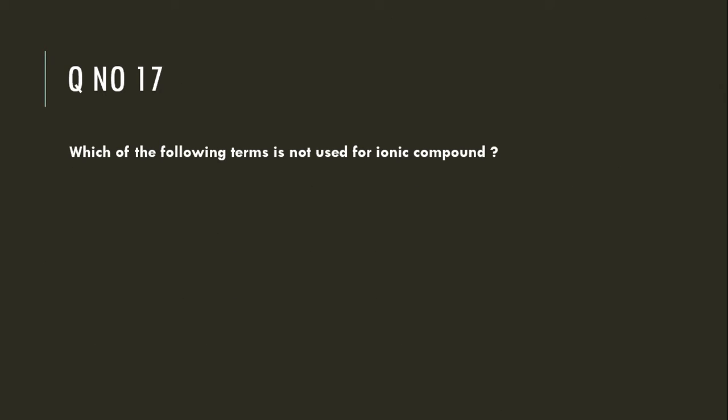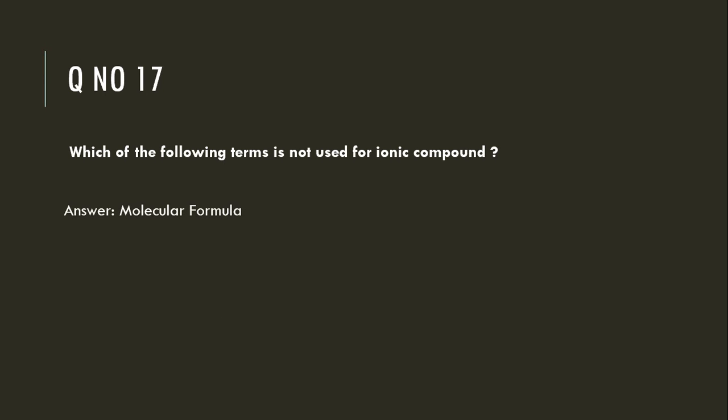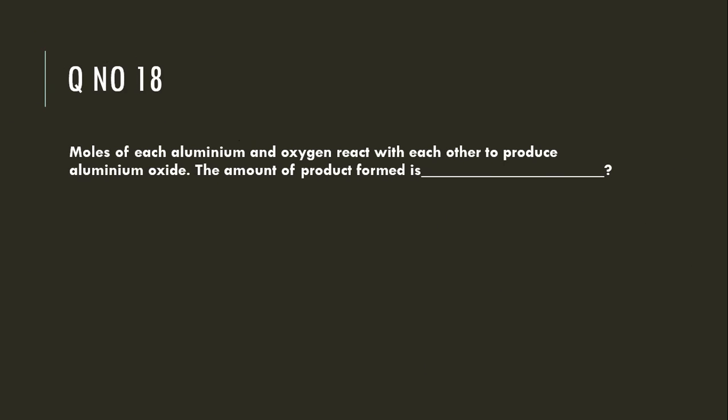Which of the following terms is not used for ionic compounds? Molecular formula. Moles of aluminum and oxygen react with each other to produce aluminum oxide; the amount of product formed is 0.18 moles.